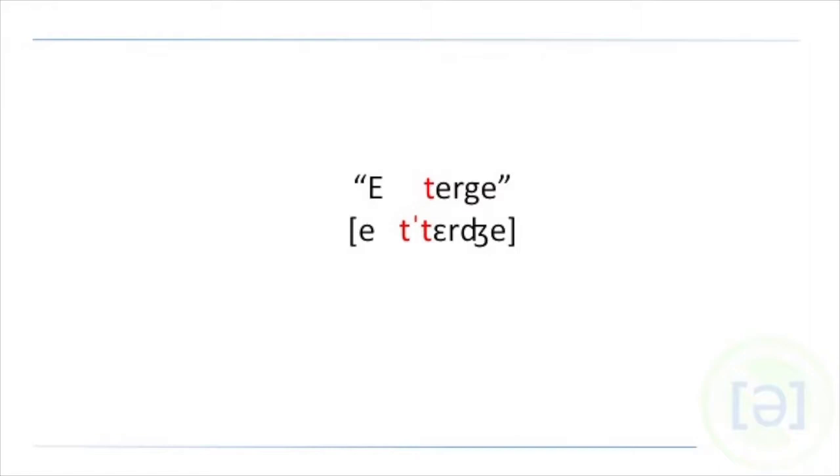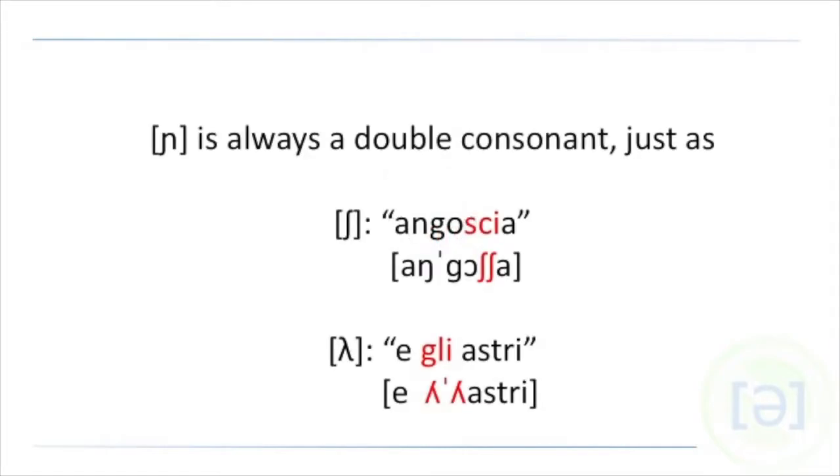Also in e terge, the T is a little stronger because after the word E we can always double the consonant. And also the word ogni, that GN sound is also always a double consonant. GN is always a double consonant, just like the SH as in the word angoscia. GL is also a rather strong consonant, as we have here with gli astri.